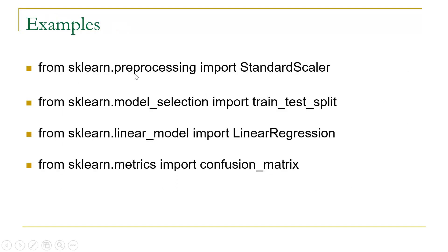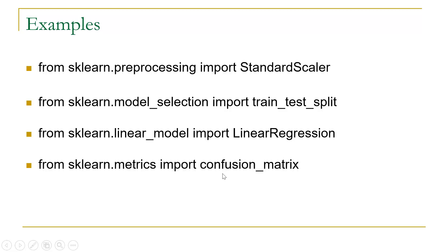For example: 'from sklearn.preprocessing import StandardScaler' — StandardScaler is used to perform data pre-processing, applying standardization or normalization over the data. 'from sklearn.model_selection import train_test_split' is used to split data between training and testing. 'from sklearn.linear_model import LinearRegression' is used to perform linear regression. 'from sklearn.metrics import confusion_matrix' can be used to display a confusion matrix based on results.